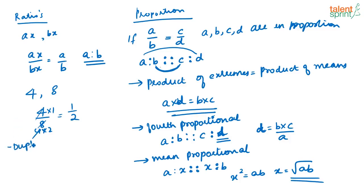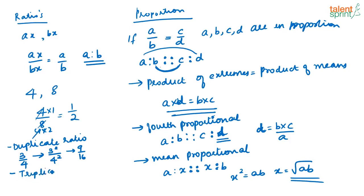Now coming back to ratios, there are a few terms you should know. The ratio of squares of two numbers is called the duplicate ratio. For example, the duplicate ratio of 3 by 4 is 3 squared by 4 squared, that is 9 by 16. Similarly, the triplicate ratio means the ratio of cubes of two numbers. The triplicate ratio of 3 by 4 is 3 cubed by 4 cubed, that is 27 by 64.